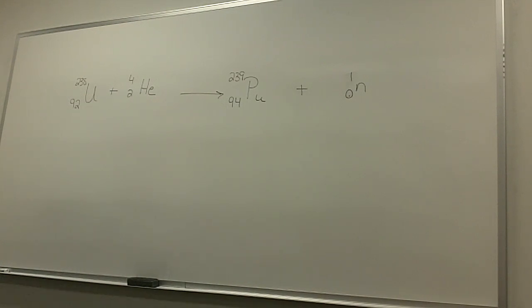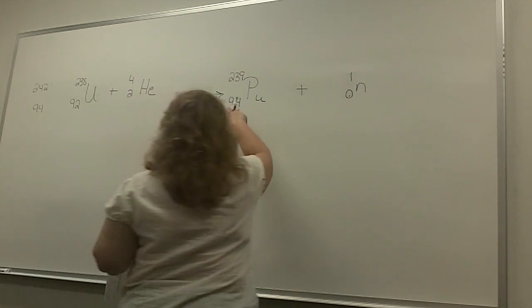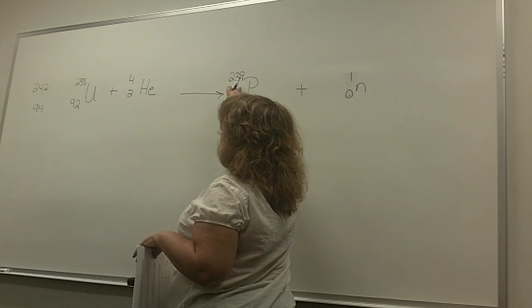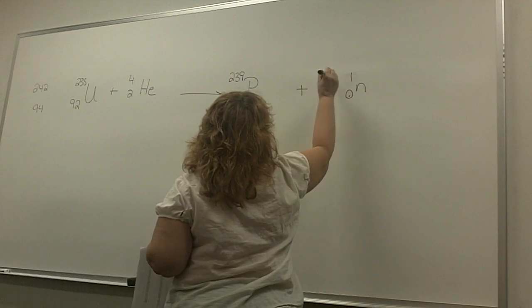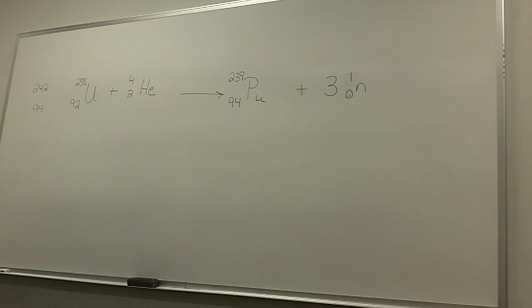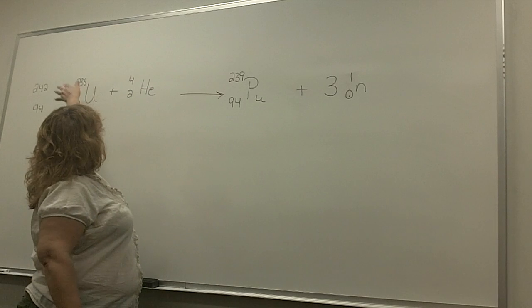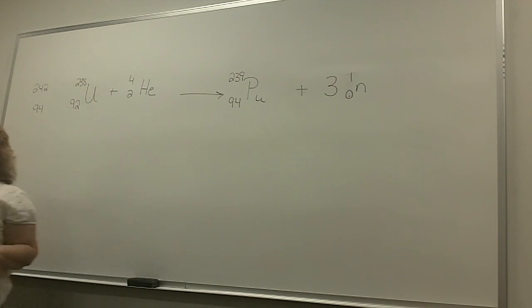So, add up the sides. We've got 238 plus 4 is how much? 242. And then 92 and 2 is 94. So, over here, I've got already 94, so I don't have to worry about that. I've got 239. So, how many of these do I need? Whatever you subtract from over there to get... So, you've got to subtract 3 from 242 to get 239. You just put the 3 over there.